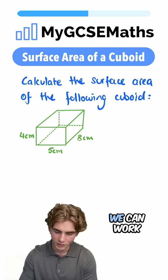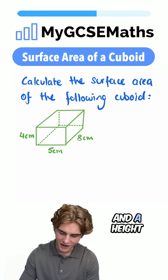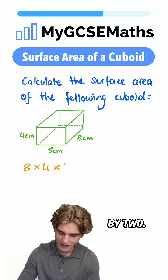So what we can actually do is we can work out this face and times it by two. That's going to have a base of eight and a height of four. So we have eight times by four times by two.